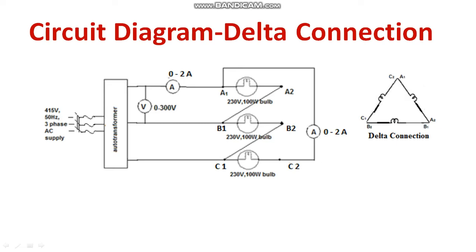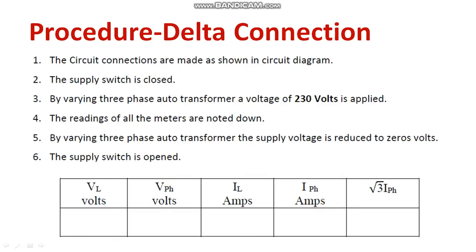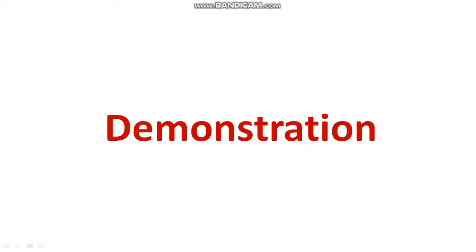You will be learning the relation between line current and phase current. Once the readings are taken, bring the auto transformer back to zero position, then open the supply switch. Note down the readings: VL for line voltage, V phase for phase voltage — both will be same in delta. Identify the line current and phase current and find the relation between them. This is a brief idea about the experiment — ultimately you are understanding the difference between star and delta connection.